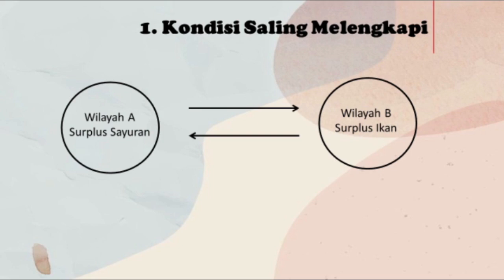Yang pertama ada kondisi saling melengkapi. Terdapat dua wilayah, wilayah A dan wilayah B. Wilayah A surplus atau kelebihan akan sayuran, namun membutuhkan ikan. Sementara di wilayah B, surplus akan ikan dan juga membutuhkan sayur-sayuran. Kedua wilayah ini saling bergantung, saling menguntungkan, dan saling melengkapi dengan cara berinteraksi melalui perdagangan atau jual-beli.